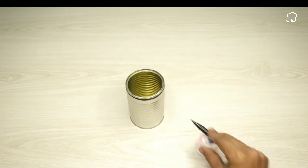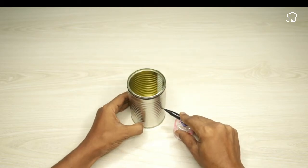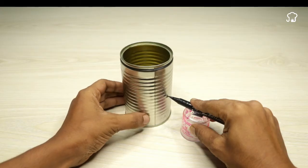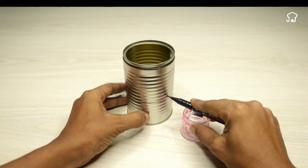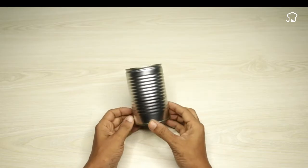Next we will use a marker to draw a circumference around the middle of the can. Carefully, we will proceed to cut the can following the marked line.